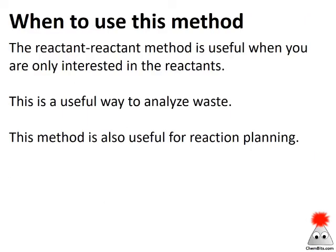When do we use the reactant-reactant method? This was a good example — a problem where we were only concerned with reactants. All the information given and all the information we were looking for was about reactants. We still needed the products to write a balanced equation, but the reactant-reactant method was more useful here. Some places you'd use this: figuring out how much waste a reaction produces, or reaction planning — for example, if I want to use five grams of sodium, how many grams of chlorine gas would I need? That's just stoichiometry using the reactant-reactant method.